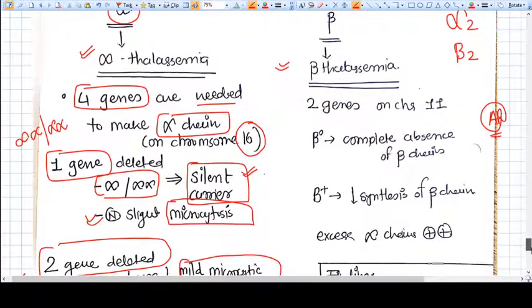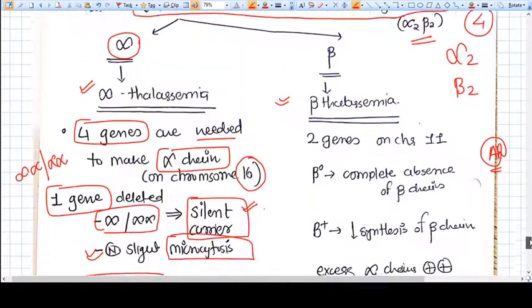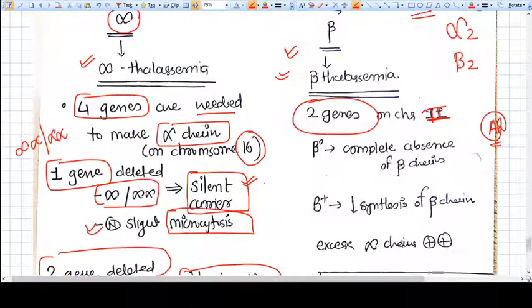We have discussed alpha thalassemia, now we will discuss beta thalassemia. As we discussed in sickle cell anemia, only the beta chain will be affected. Beta chain synthesis needs two genes on chromosome number two.